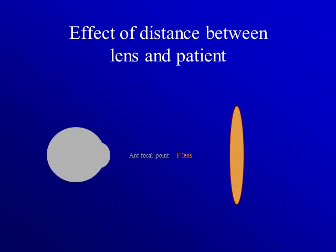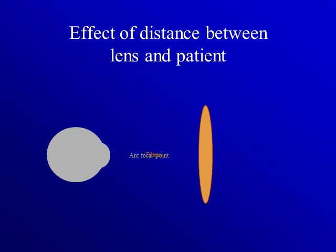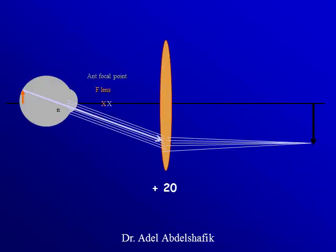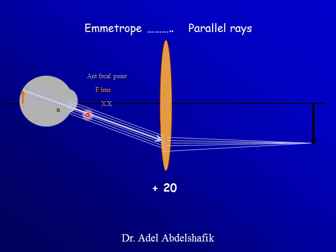Now I want to discuss the effect of distance between the lens we are using and the patient. We can hold the lens such that the focal point of the lens coincides with the anterior focal point of the patient, or we can hold the lens closer to or farther from the patient. Suppose we have an emetropic eye and the focal point of the lens is between the anterior focal point of the patient and the cornea. In an emetropic eye, rays come out parallel.